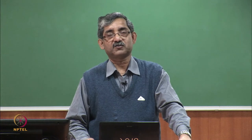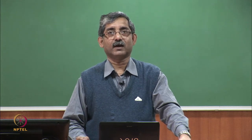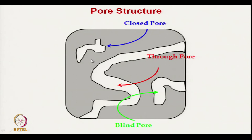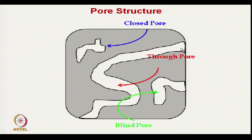The pore structures, as already mentioned, come in three different types: closed pore, which is blocked from all sides; blind pore, which is open from one surface and ends within the structure; and through pores, which start from one surface and end at the other. Through pores are essentially important for filtration applications.